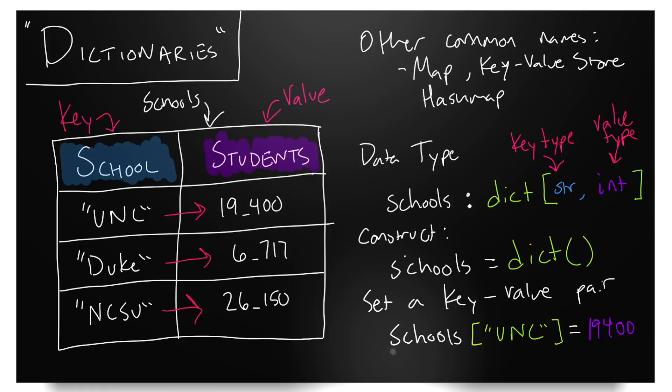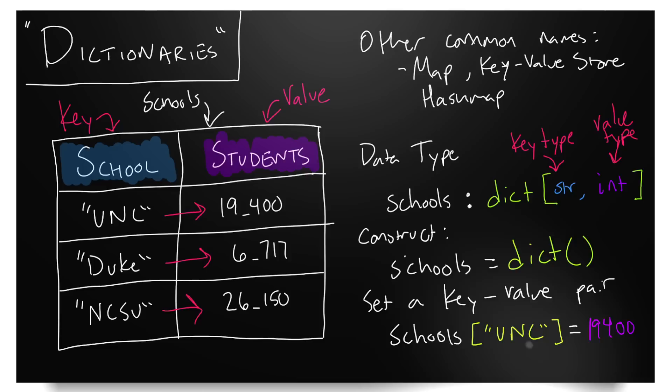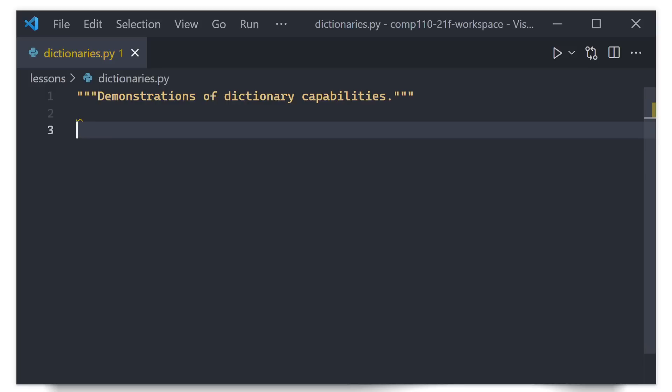We can also access a key-value pair in a very similar way. To access it, we use schools with subscription notation to say: what is the value associated with 'unc'? We'll see that there are some other operations we can carry out on a dictionary soon, but let's go ahead and set up an example in Python to play around with this.